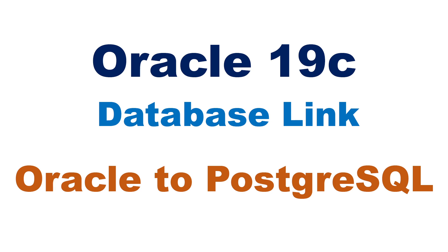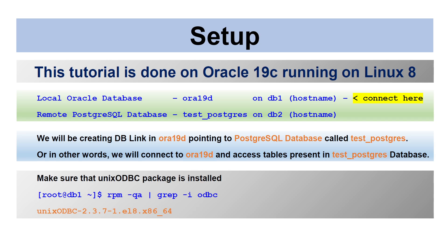Hello all. In this tutorial we will learn how to set up the database link between Oracle and PostgreSQL. This tutorial is done on Oracle 19c running on Linux 8. I have a local Oracle database called Ora19d running on DB1, and I have a remote PostgreSQL database called test_postgresql running on DB2. We will be creating a DB link in Ora19d pointing to the PostgreSQL database test_postgresql — connecting to Ora19d and accessing tables present in test_postgresql.